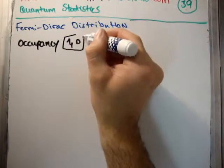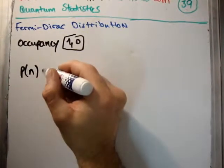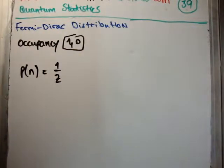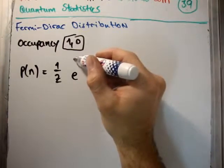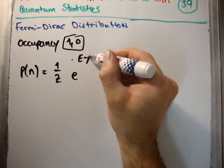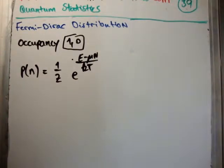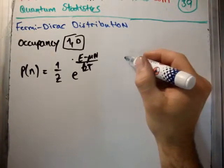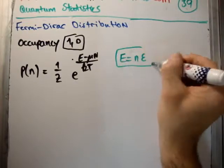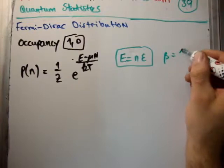So there are only two possible ways the state can be occupied. The probability of state n occurring is equal to 1 over z, where z is the grand partition function, times e to the minus (E - μ)n over kT. Now, we're talking about quantum quantization of energy, therefore E is equal to n times epsilon, the number of particles with energy epsilon. And of course beta is equal to 1 over kT.